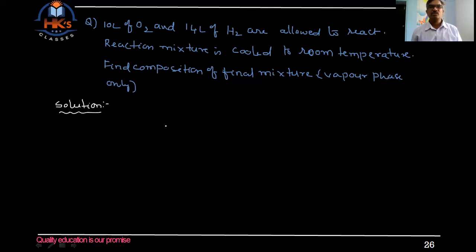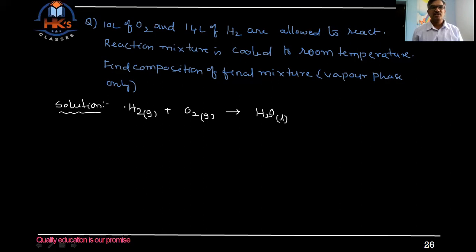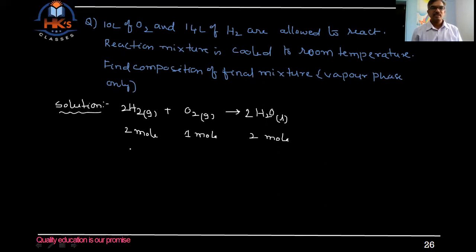First we need to write the balanced equation. As per the data, there is a reaction between hydrogen and oxygen: hydrogen gas combines with oxygen gas to give H₂O. The reaction mixture is cooled, so water becomes a liquid. The balanced equation is: two moles of H₂ combine with one mole of O₂ to give two moles of H₂O. We can convert this to volumes using Gay-Lussac's law: two liters of hydrogen combines with one liter of oxygen.